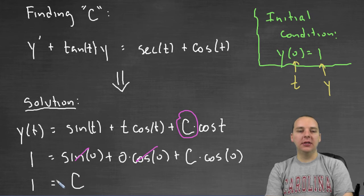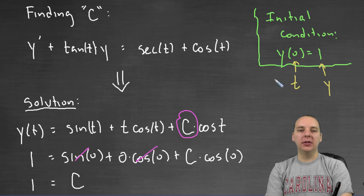The constant of integration is 1, that's our specific numerical value for C. The way I found it was using the initial conditions.